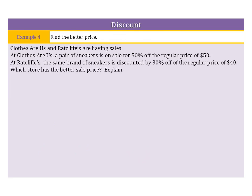As we go on to our last example, we need to compare in order to find the better price. Now, Clothes R Us and Ratcliffe's are having sales. At Clothes R Us, a pair of sneakers is on sale for 50% off the regular price of $50. At Ratcliffe's, the same brand of sneakers is discounted by 30% off the regular price of $40. Which store has the better sale price? And explain.